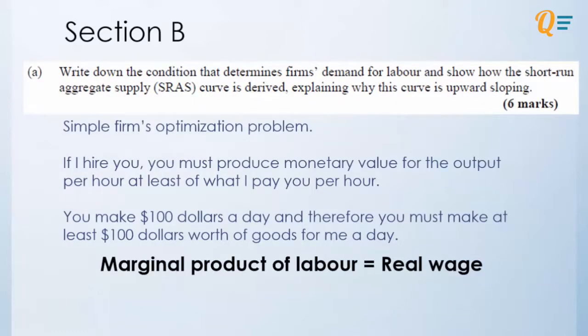All right, now the first question is write down the condition that determines firms' demand for labor and show how the short run aggregate supply curve is derived. This curve is upward sloping, so we need to explain why this curve is upward sloping.